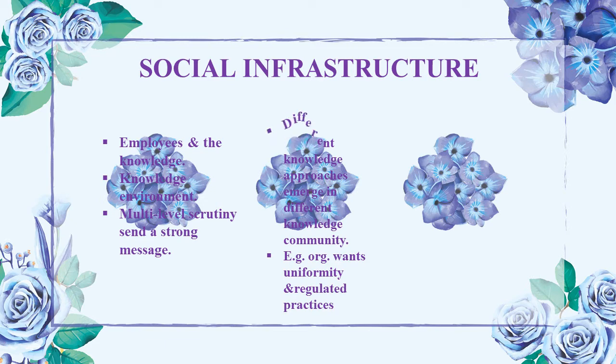Trust and relationship building underlie the knowledge processes and heavily influence the level to which effective knowledge management develops. Different knowledge approaches emerge in different knowledge communities. For example, an organization aiming to create uniformity and regulated practice is likely to place great importance on codifying and disseminating existing good practice. In banks, well-defined tasks are assigned to specific roles, and these functions are already codified. Thus, there is more emphasis on knowledge adoption than on innovation in this setting.